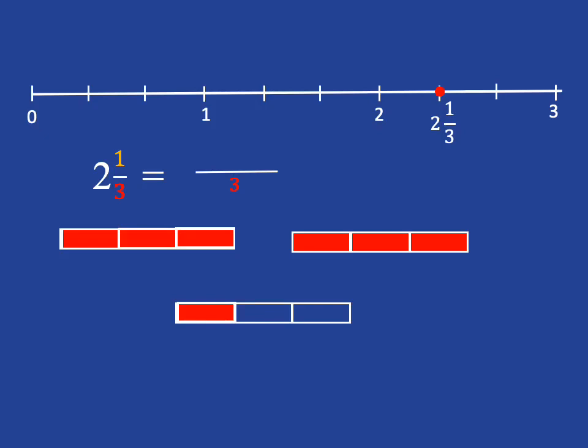If I want to go the other way and start at 2 and 1 third, and I want to get back and say how many thirds are there in total, well, that's easy. What I need to notice is that for every 1, I have 3 one third pieces. So in 2, I have 2 times 3 one third pieces.